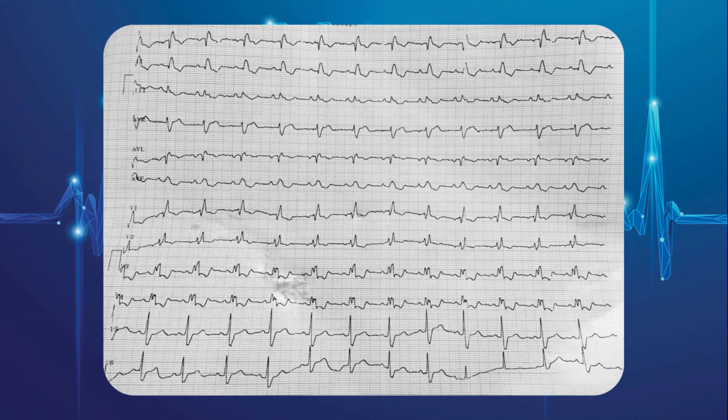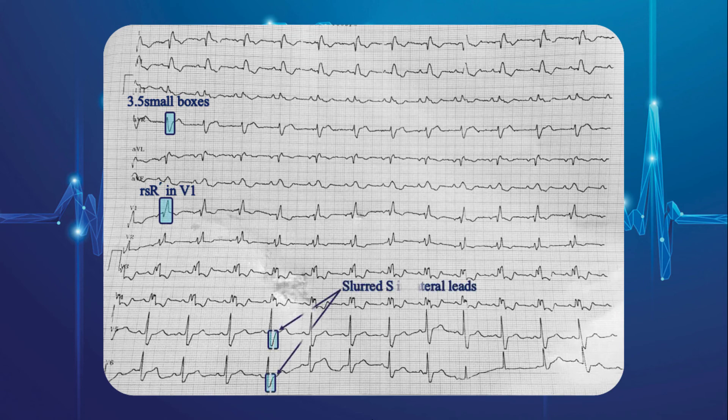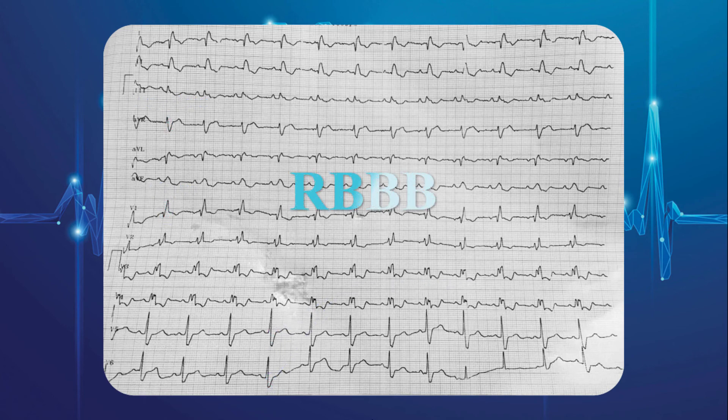QRS complexes are 3.5 small boxes in duration. On the other hand, there is RSR prime pattern in V1, with prominent slurred S in lateral leads. So QRS complex changes are due to right bundle branch block.